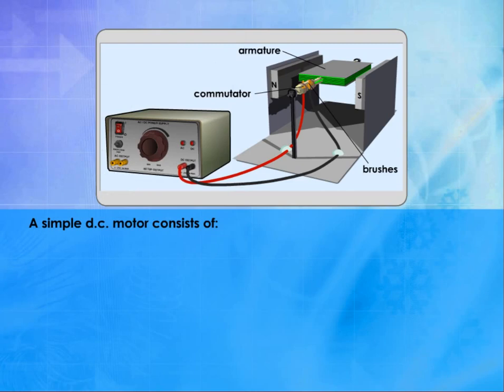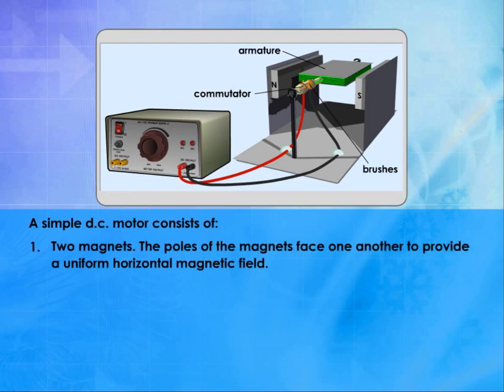A simple DC motor consists of: 1. Two magnets. The poles of the magnets face one another to provide a uniform horizontal magnetic field.